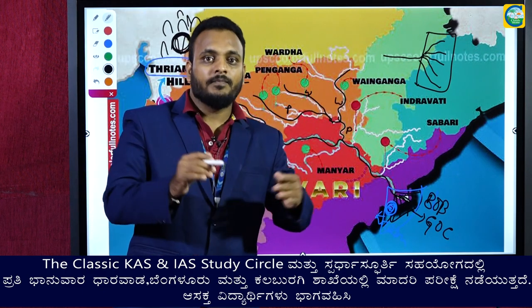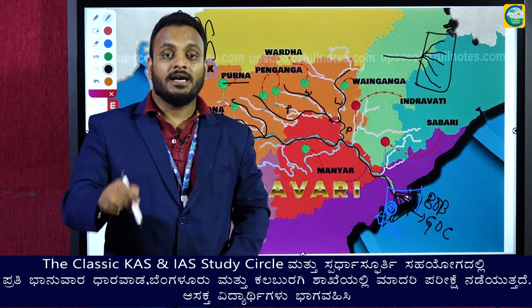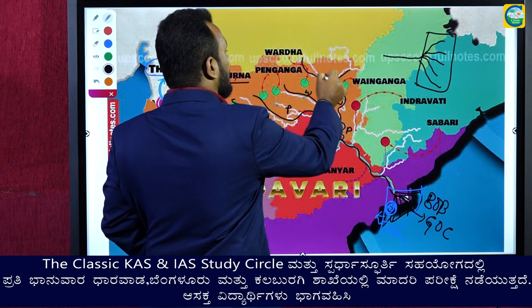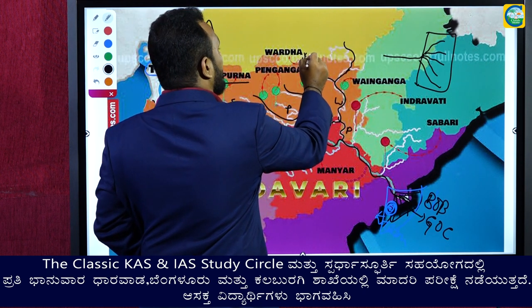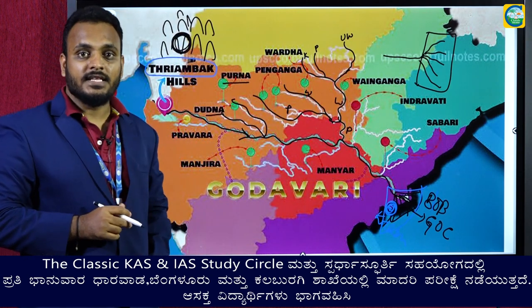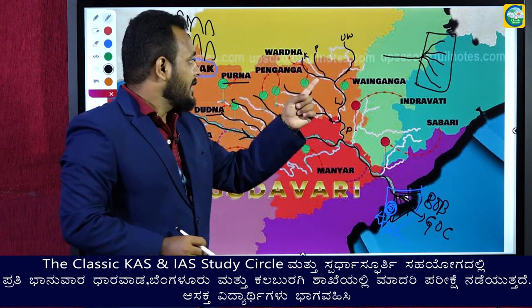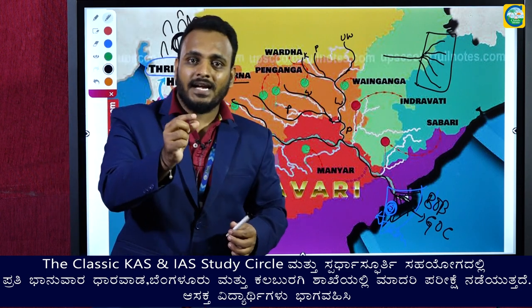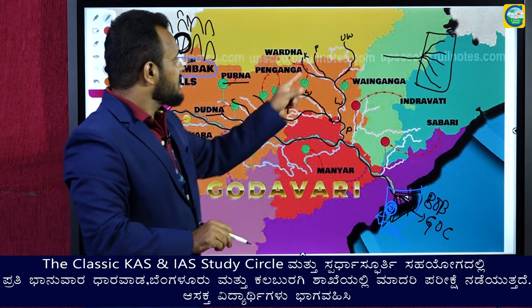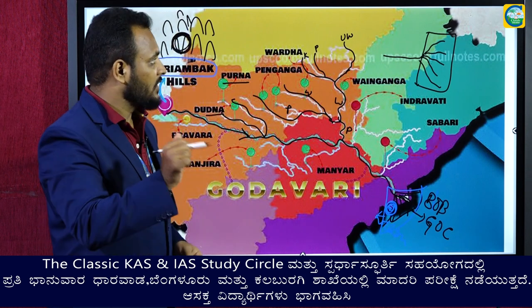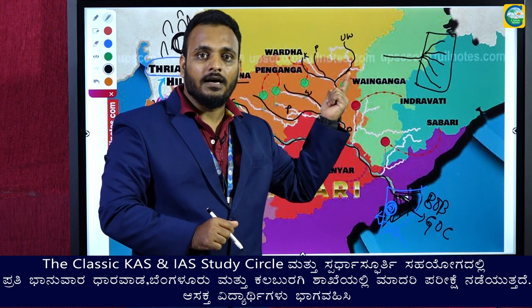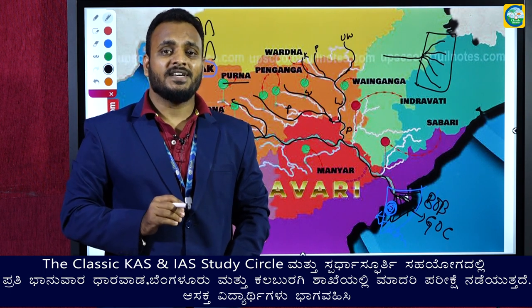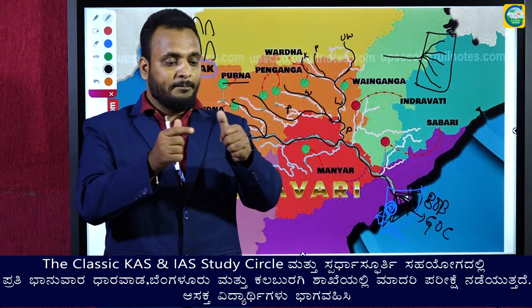Wainganga is also created by three important streams originating in Madhya Pradesh: Kanha, Pench, and Upper Wainganga. There is Kanha National Park in Madhya Pradesh through which the Kanha stream flows. Pench National Park is located at the border of Madhya Pradesh and Maharashtra, and this Pench tributary travels through that park. If asked which three streams create Wainganga, the answer is Kanha, Pench, and Upper Wainganga. If asked which three streams create Pranita, the answer is Penganga, Wardha, and Wainganga.